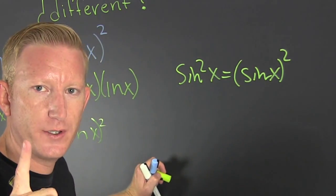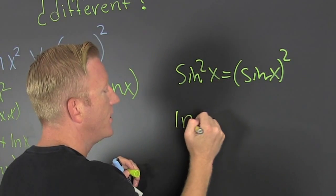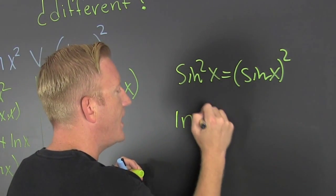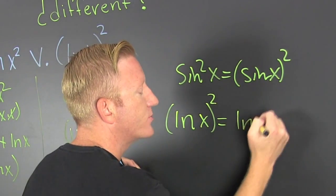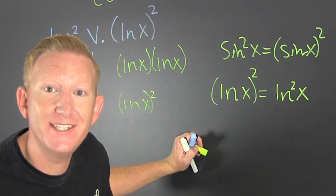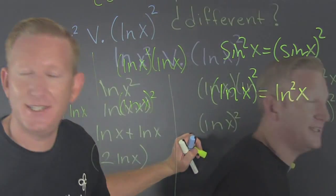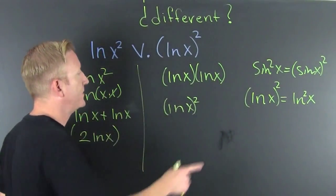Some books—one book I've seen—writes the natural log of x squared as ln squared of x, and that totally takes care of the discrepancy. More books should be like that.